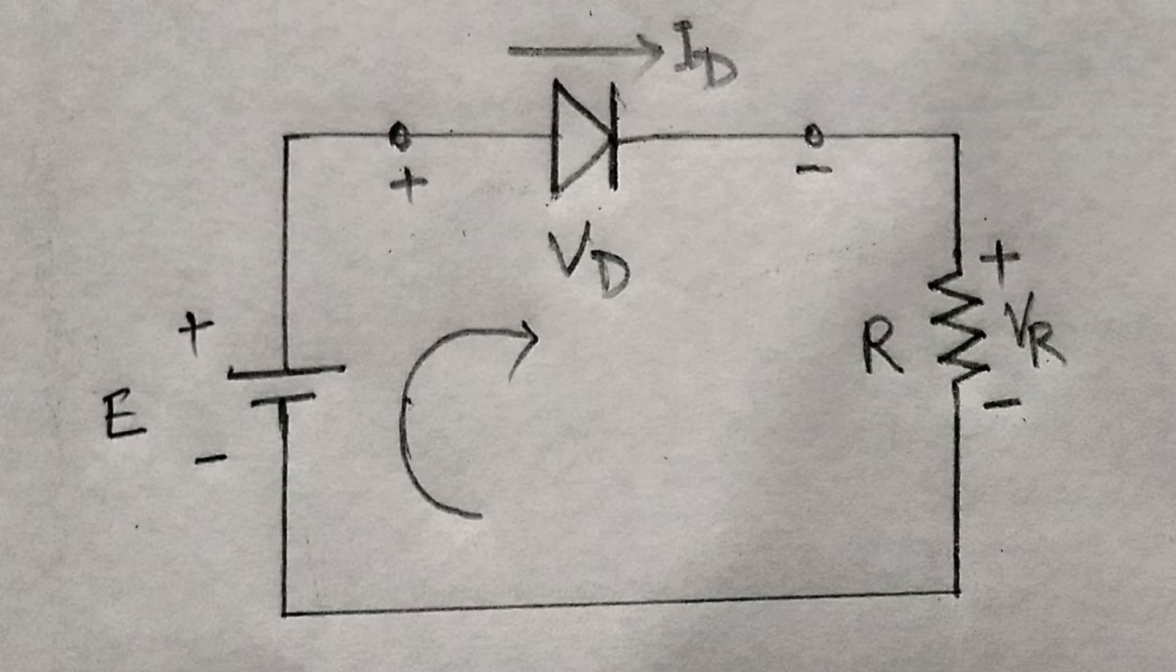Here, Vd is the voltage across the diode. Id is the current through it. Vr is the voltage across the load resistance R. The diode is forward biased. To know more about forward biasing, follow the link in the description.